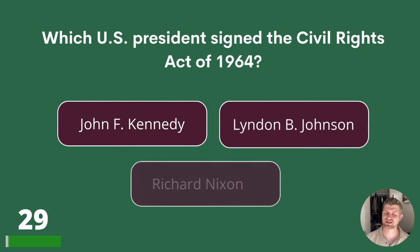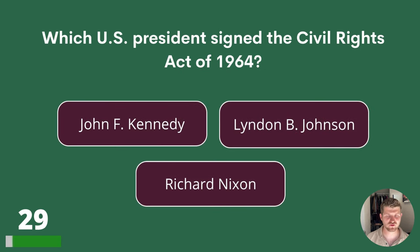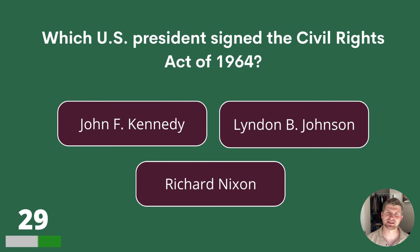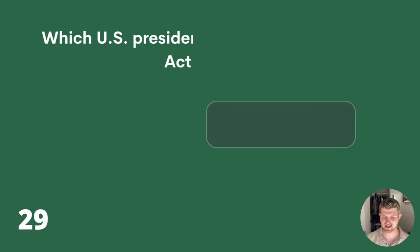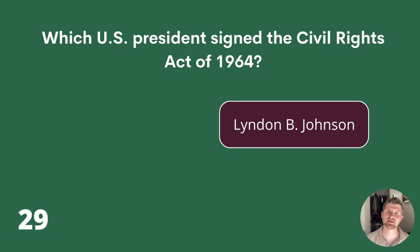Question 29. Which US President signed the Civil Rights Act of 1964? John F. Kennedy, Lyndon B. Johnson or Richard Nixon? The answer is Lyndon B. Johnson.